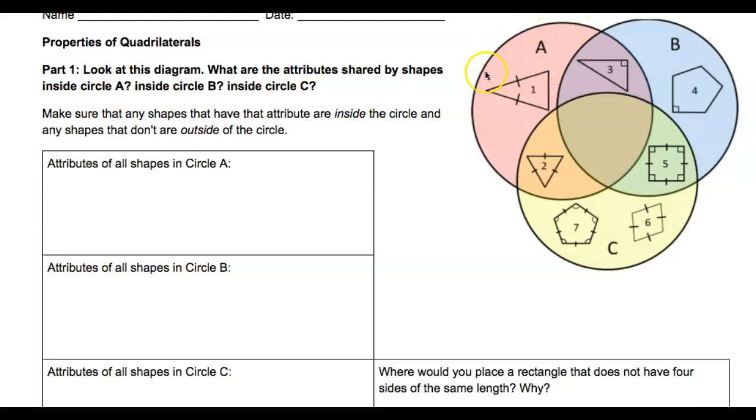So your first job is to look at this circle A. What do all of these shapes have in common? Then look at circle B. What do all of these shapes—one, two, three—what did they all have in common? And then circle C. What do all these shapes have in common?